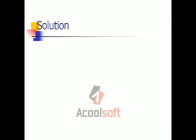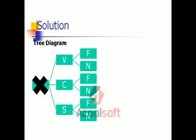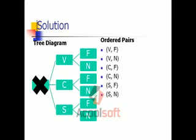Here's what the tree diagram is going to look like for that one. I start out with three branches — the three choices: vanilla (V), chocolate (C), and strawberry (S). Using the first letter of everything is perfectly acceptable. Then each one of those has the choice of having fudge or nuts on it, so F and N branch off for each of them. We count the end — six items — and that would be our denominator for a probability follow-up question. For ordered pairs: vanilla with fudge, vanilla with nuts, chocolate with fudge, chocolate with nuts, strawberry with fudge, and strawberry with nuts.